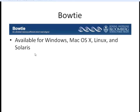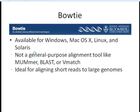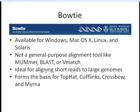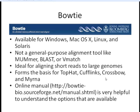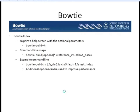Bowtie is available for Windows, Mac, Linux, and Solaris operating systems. This is not something you want to use for just any sequence alignment like BLAST — it's designed specifically for aligning short reads to large genomes. Bowtie forms the basis for TopHat, Cufflinks, Crossbow, and Myrna, though Crossbow and Myrna are cloud computing programs we won't cover today. The online manual with download information and all available options is very helpful.